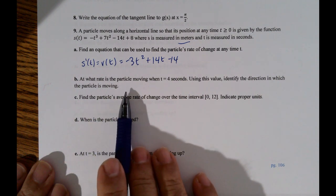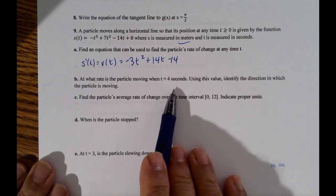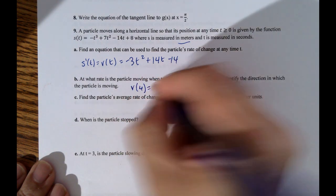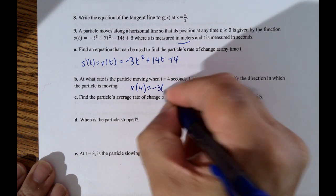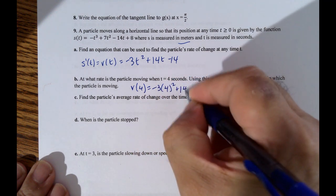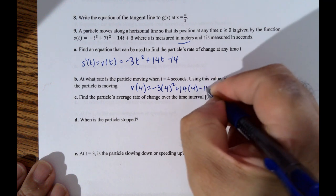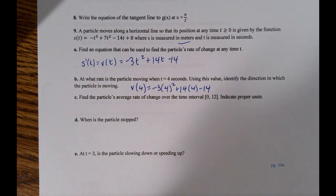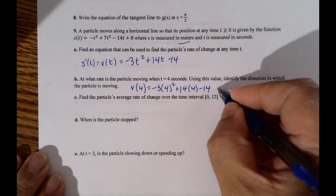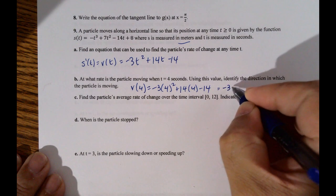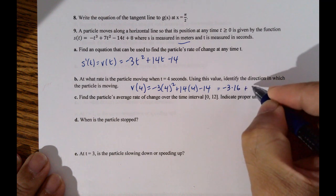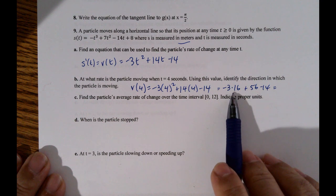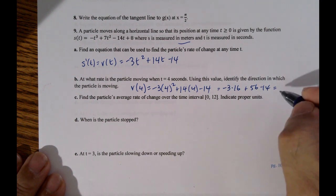And what rate is the particle moving when t equals 4? So all you do is plug in that 4, so v of 4 equals negative 3 times 4 squared plus 14 times 4 minus 14. So that's negative 3 times 16 plus 56 minus 14. It's negative 48, so it's 8 minus 14 is negative 6.